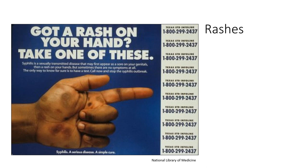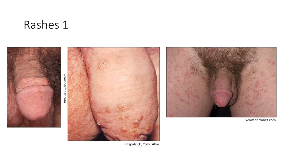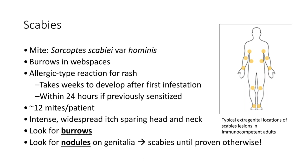Moving on to rashes — here's a classic STD poster: 'Got a rash on your hand? Take one of these — syphilis, a serious disease, simple cure.' Rashes number one: photos of the penis and genital area with many bumps, some scratched off, very red — this is scabies, caused by the mite Sarcoptes scabiei var. hominis.